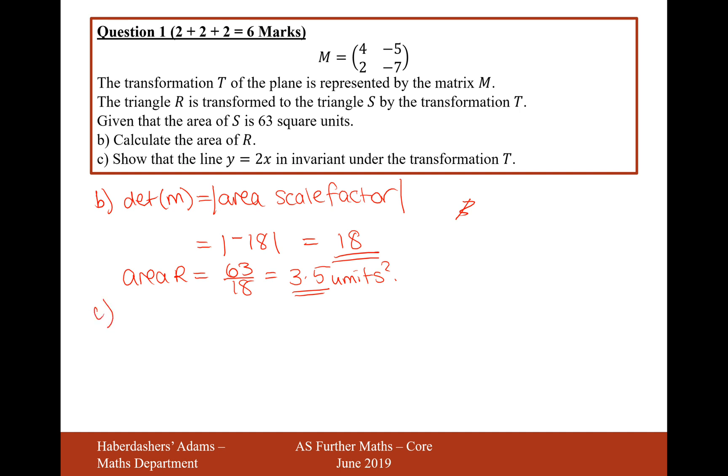And moving on to part C, show that the line y equals 2x is invariant under the transformation. Now, if a line is invariant, then the line will transform to itself. That doesn't necessarily mean that each coordinate on the line will transform to itself. But if it's on the line, it will transform to another point on the line, and the line will therefore remain itself.